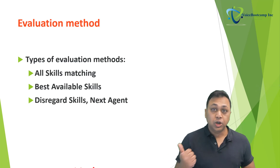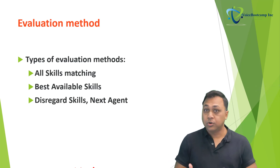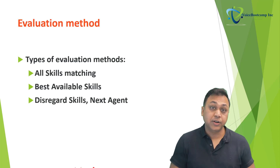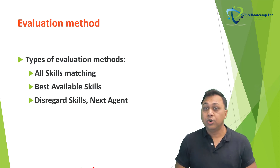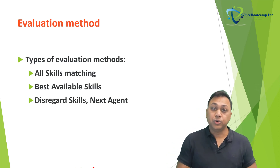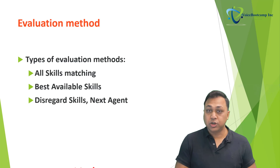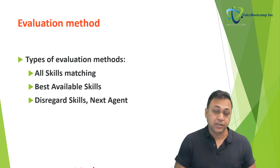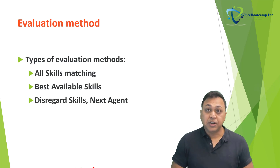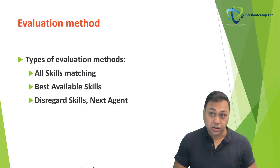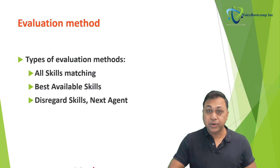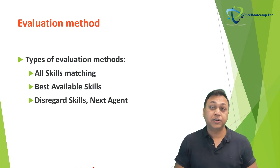You can configure to consider skills, time, or just consider available time for an agent, time in a queue, or priority for interactions. The evaluation method chosen for a queue needs to be coordinated with the interaction flow that is created in Architect. The evaluation method does not use language settings on interactions. If a language requirement is set on the interaction, it is used to filter the agent before the evaluation and scoring is done.